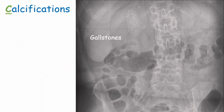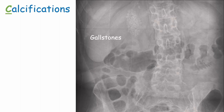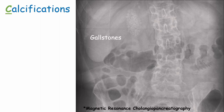Gallstones sitting in the gallbladder can appear as calcification. However, gallstones aren't usually visible on x-ray as they are most commonly made of cholesterol, which isn't radiopaque. Less commonly, they can be made of a mixture of bilirubin and calcium, which is radiopaque and therefore visible. Abdominal x-rays aren't the best imaging choice for gallstones - we typically use ultrasound or a more specific test called MRCP.